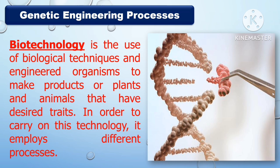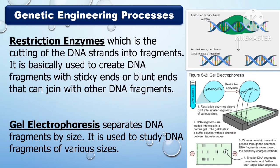Let's get started. In this technology, it employs different processes. The following are the genetic engineering processes. The first one is the restriction enzyme, which is the cutting of the DNA strands into fragments. It is basically used to create DNA fragments with sticky ends or blunt ends that can join with other DNA fragments.